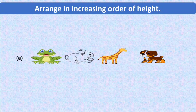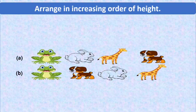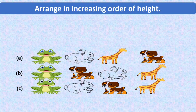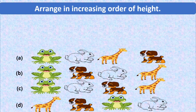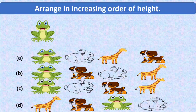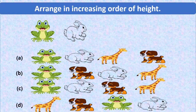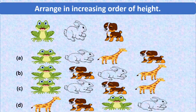Fourth and last question for today's lesson: arrange in increasing order of height. Here we have four animals — a frog, a rabbit, a giraffe, and a dog. We have to arrange them in increasing order of their heights. In increasing order, we choose the shortest one first. The frog is the shortest one. Then amongst the three left, the rabbit is the shortest. Then between the dog and the giraffe, the dog is the shorter one.